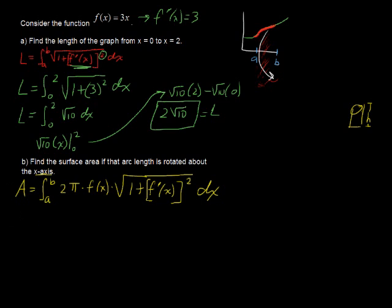We have area equals the integral from 0 to 2 of 2π. Now f(x) is 3x, that's our f(x), times the square root of, I'm just going to say 10, well, I'll write it, 1 plus 3 quantity squared dx.